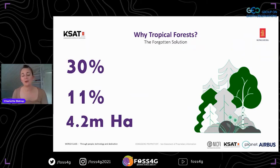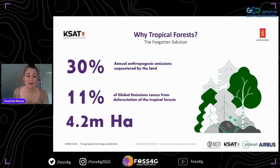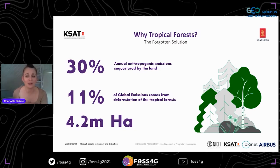The land sequesters 30% of annual anthropogenic emissions, and most of that is through forest capture. Deforestation of tropical forests is a large source of greenhouse gas emissions, accounting for approximately 11% of global emissions. There really is no way of reaching the sustainable development goals without halting tropical forest deforestation and increasing afforestation.